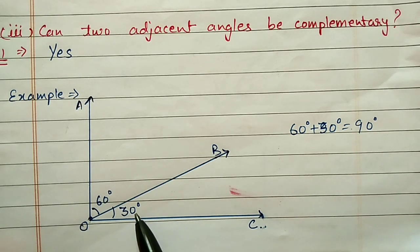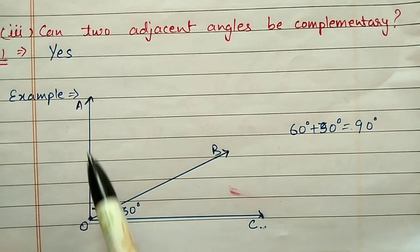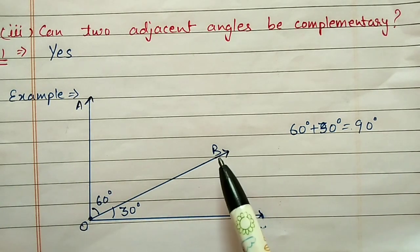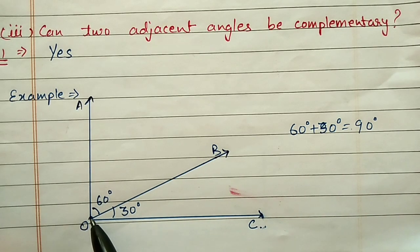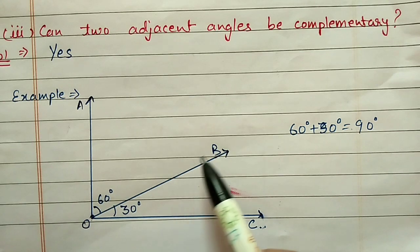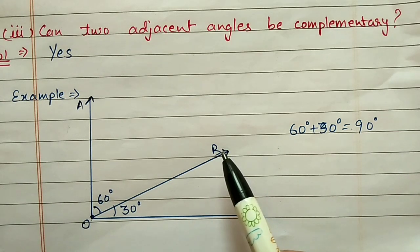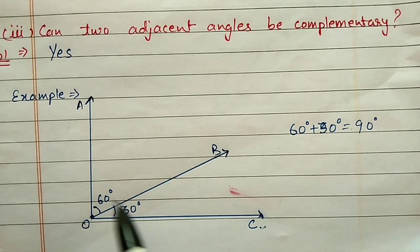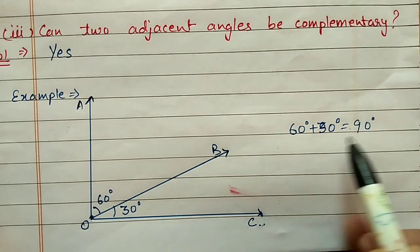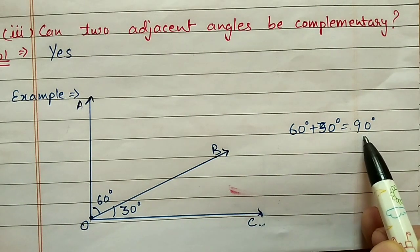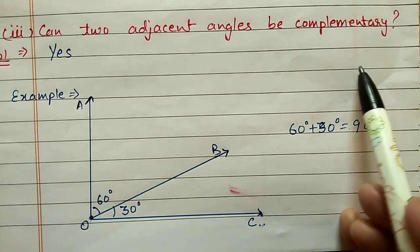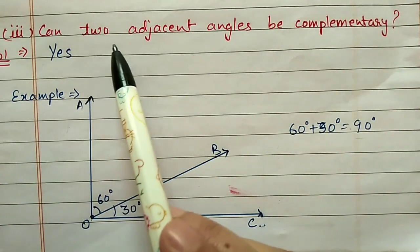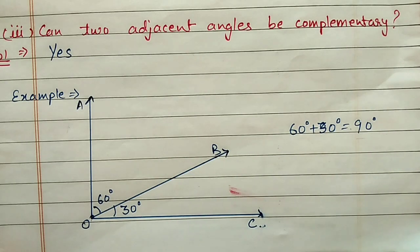Third part: can two adjacent angles be complementary? I have taken an example here. Angle AOB and angle BOC are adjacent angles because one vertex is common and one ray is common. One angle is 30 degrees and another is 60 degrees. If we add 60 and 30, the answer is 90 degrees, which is the property for complementary angles. So yes, two adjacent angles can be complementary.